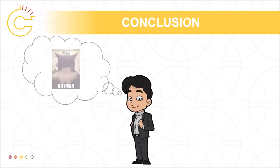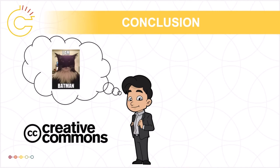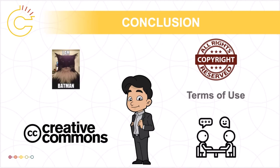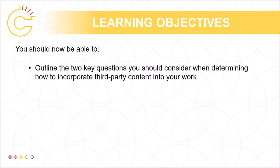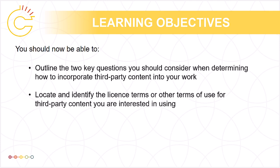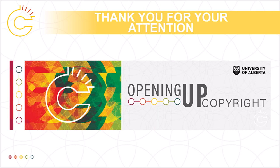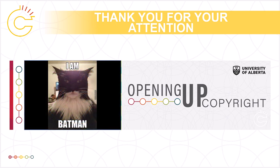To sum up, sometimes it will make sense to use other people's work as part of your own. Many rights holders make this easy by assigning an open license to their work. Others want or need to restrict reuse, sometimes to limit commercial exploitation of the work. The terms of use associated with the work, along with your willingness to rely on fair dealing or other possible exceptions to infringement, will determine how and when you use third-party content. Asking for permission from the rights holder is also an option. You should now be able to outline two key questions to consider when incorporating third-party content, locate and identify license terms or other terms of use for third-party content, and determine how and when you may use works for which the copyright is held by others. This has been the Opening Up Copyright module on including third-party content in your work. Thank you for your attention.